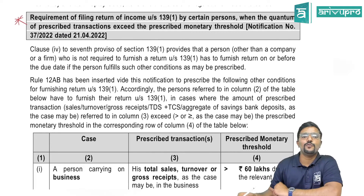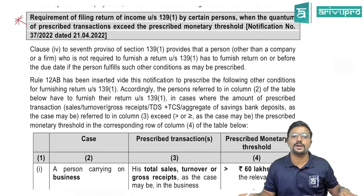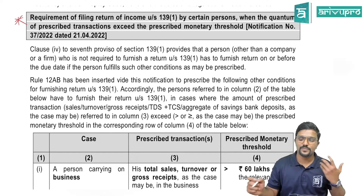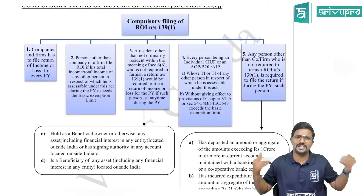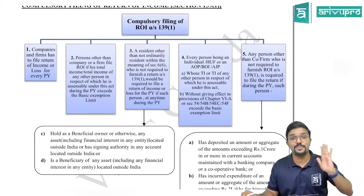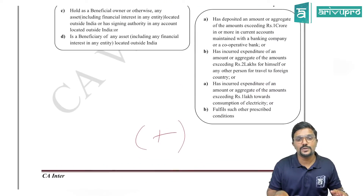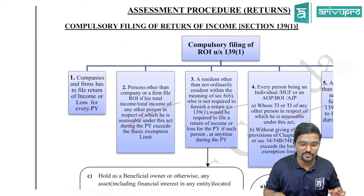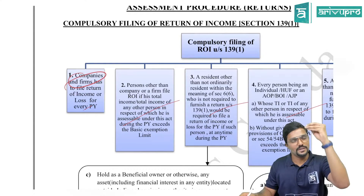Rule 12AB is a new rule inserted through this notification prescribing additional conditions for furnishing return under Section 139(1). Any person who is not covered under Section 139(1) — if that person is carrying on any business and is not a company or partnership firm — and if their total sales, turnover, or gross receipts in the business exceed 60 lakh during the relevant previous year, they must file their return of income mandatorily, regardless of income level.